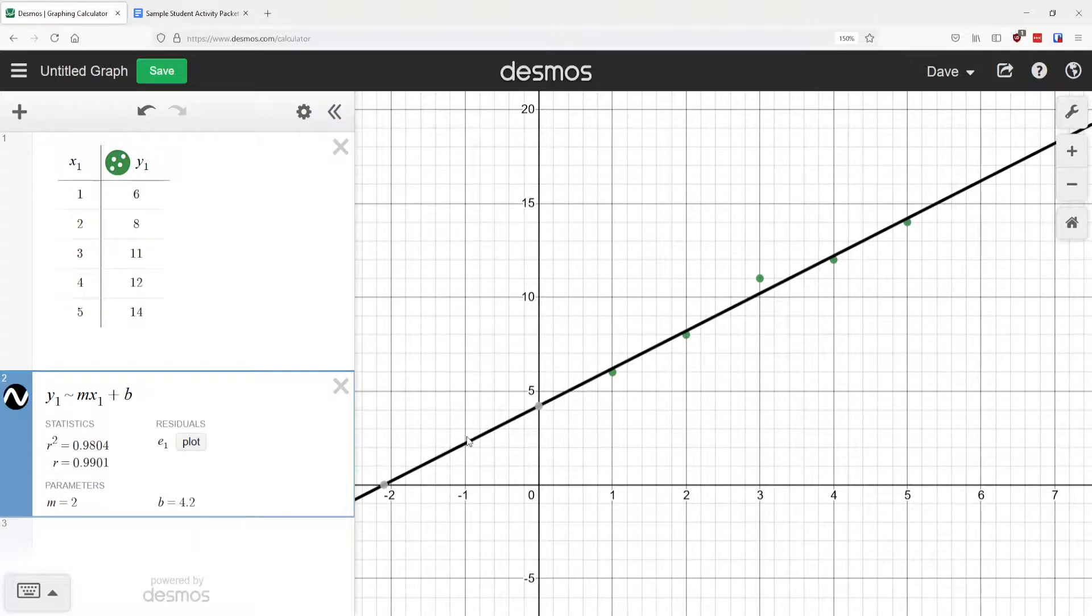And that symbol means is approximately M X one plus B. And you can see it drew this line and we're like, wow, that's pretty close. That's touching four of the points, not exactly going through them, but touching them.